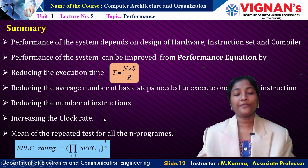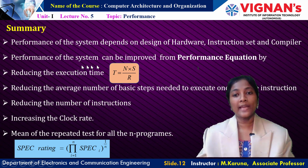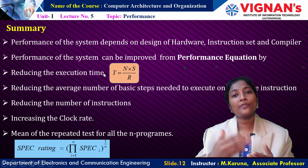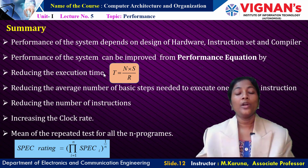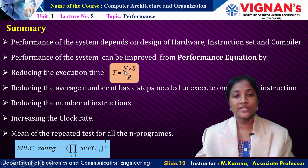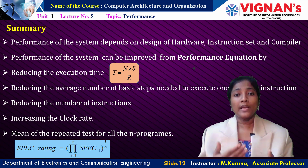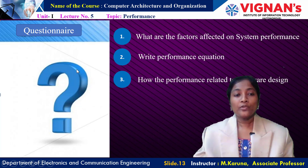Summary: performance of the system may be affected by hardware design, instruction set, and compiler design. Performance can be improved by modifying the equation T = N × S / R — by reducing the number of instructions N, reducing the basic steps S required to perform one instruction, and by increasing the clock rate R. Performance can also be measured with the help of SPEC rating, and indirectly we can measure OS performance, compiler performance, and memory accessing performance.